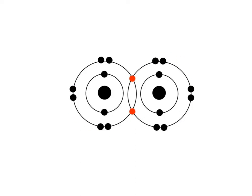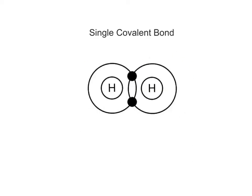As an analogy, think of a covalent bond as a strong handshake. Covalent bonds are named based upon the number of electron pairs they share. A single covalent bond forms when two atoms share one pair of electrons.